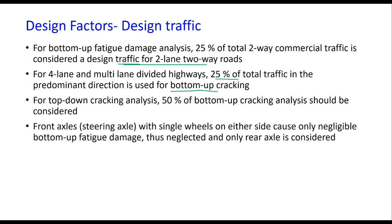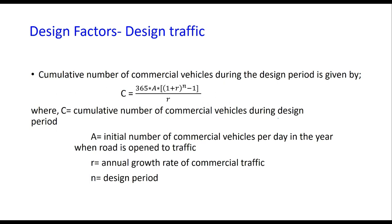For top-down cracking analysis, 50% of the bottom-up cracking traffic value is taken. Front axles with a single wheel on either side cause very little bottom-up fatigue damage and are therefore generally not considered in the design. Design traffic is calculated using the formula: 365 × A × [(1 + r)^n − 1] / r, where r is the growth rate and A is the initial number of commercial vehicles per day in the year the road opens to traffic.